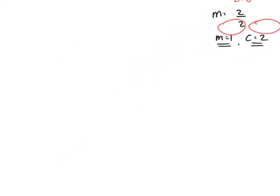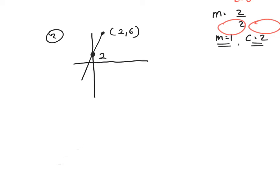Let's try example 2. We have the x-axis and y-axis, and the equation of a straight line is y equals mx plus c. Let's first of all establish the points. I've got the second point there, which is (2, 6). What's the first point? Starting at the origin and going up to 2, I don't move along at all, so I've got an x-coordinate of 0. I move up to 2, so that's a y-coordinate of 2. From left to right: x1, y1, x2, y2.